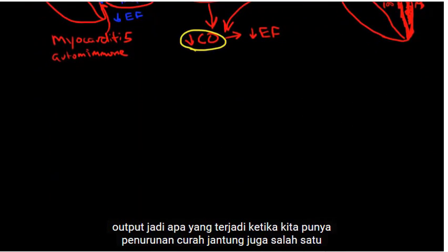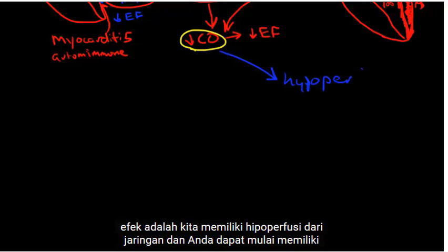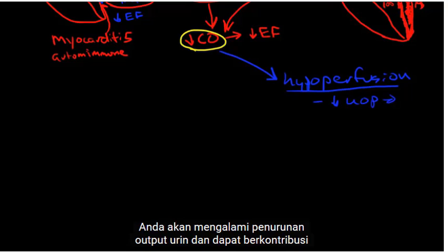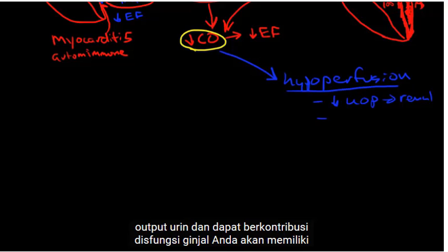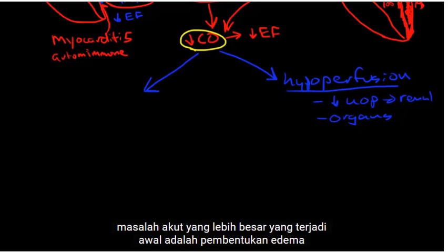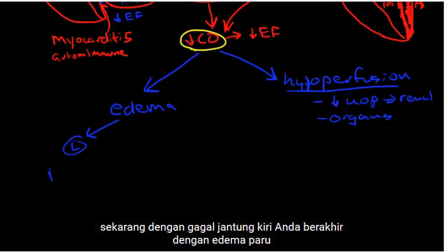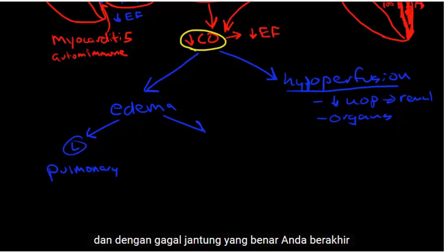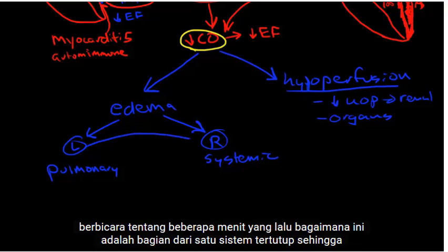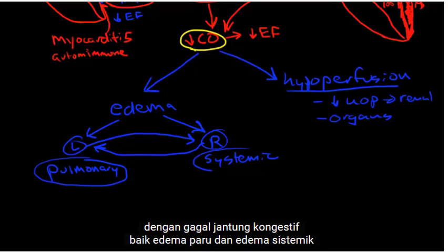What happens when we have decreased cardiac output? One effect is hypoperfusion of tissues. You can start to have effects all over the body — decreased urine output, possible renal dysfunction, and decreased flow to other organs. But the bigger acute problem that happens early on is the formation of edema. With left heart failure, you end up with pulmonary edema. With right heart failure, you end up with systemic edema. And since they are all part of one closed system, most people with congestive heart failure will have both pulmonary and systemic edema.